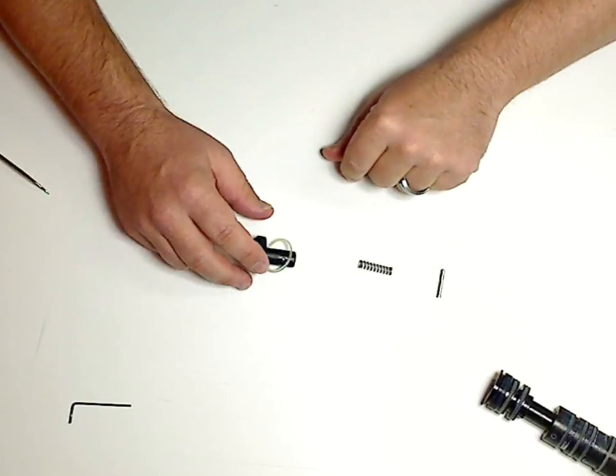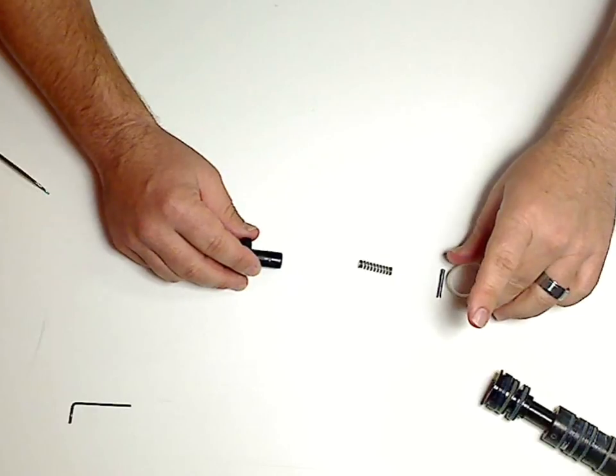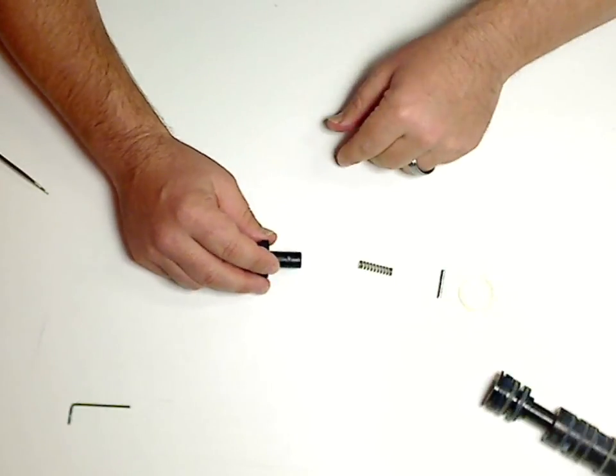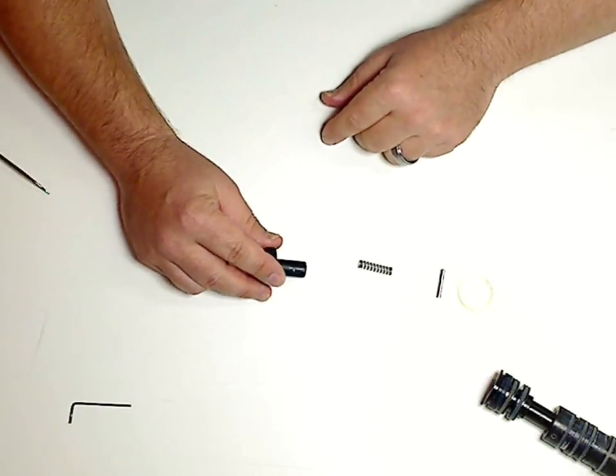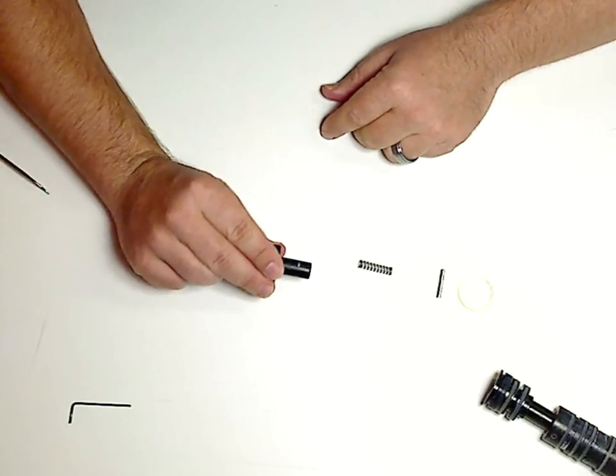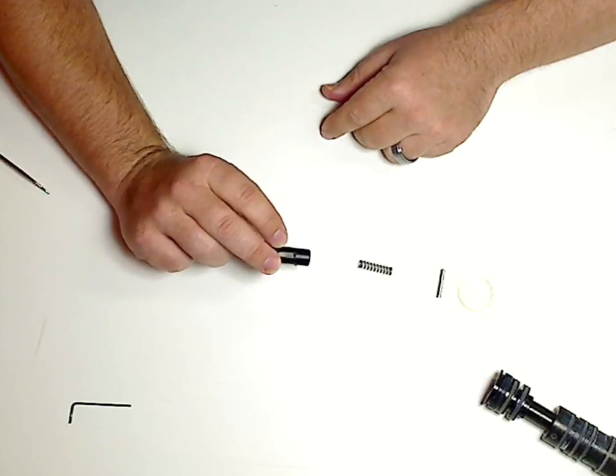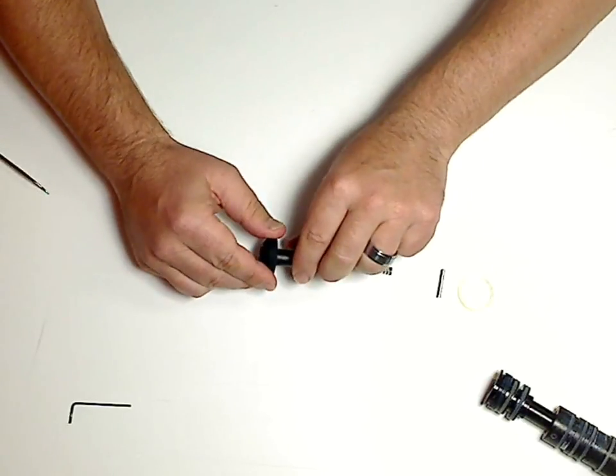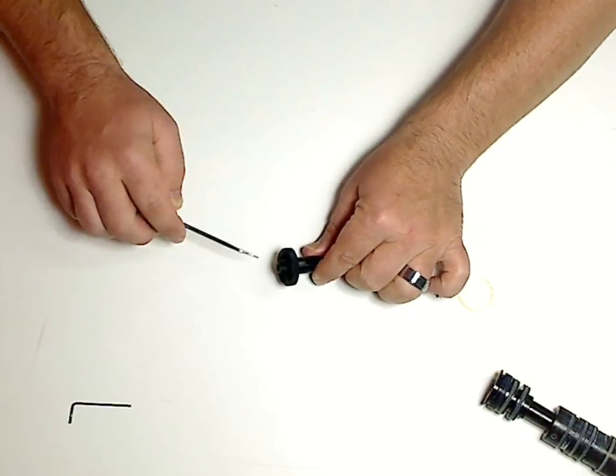There's your spring. That's the o-ring that was on the base. Now this is where you want to be careful. There are two ball bearings, one on either side, that lock things in place. We don't want to lose those.